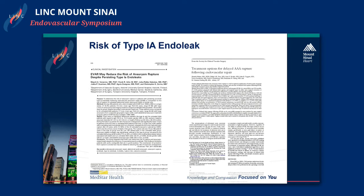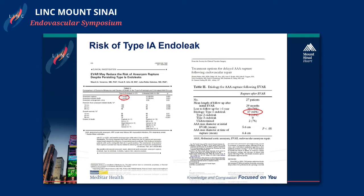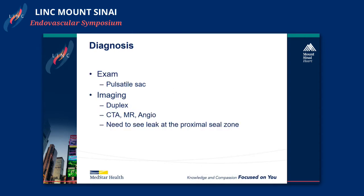So what's the problem with the type 1a endoleak? What happens is the sac becomes perfused again and pressurized, and ultimately they can rupture. In fact, the most common cause of rupture after EVAR is a type 1a endoleak. So these do need to be treated.